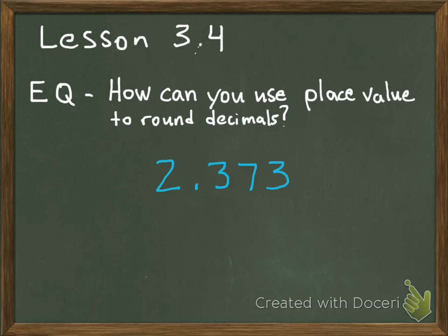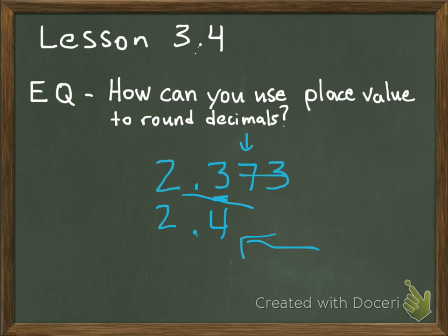Now I've placed a whole number in the ones place, so we have 2 and 373 thousandths. If we're rounding 2 and 373 thousandths to the nearest tenth, the same rules apply. The tenths place is underlined; you look right next door, and the number in the hundredths place tells the tenths place what to do. Since that 7 is 5 or more, it tells that 3 to raise up to a 4. Everything in front stays the same — the decimal and the 2 stay. Everything after gets dropped. So 2 and 373 thousandths rounded to the nearest tenth is 2 and 4 tenths.